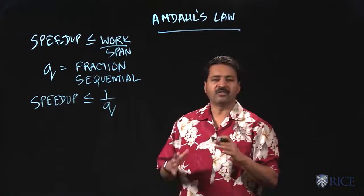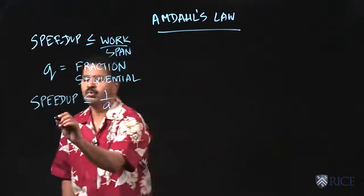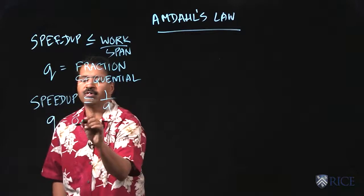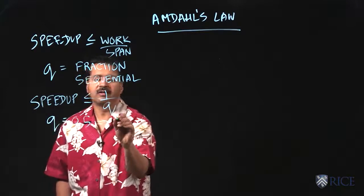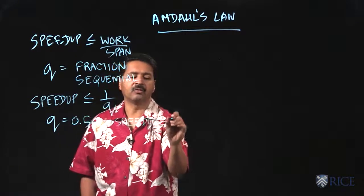Now, the interesting thing about this is it's a very simple observation. If q was 50% or 0.5, it says that the speedup will be less than equal to 2.